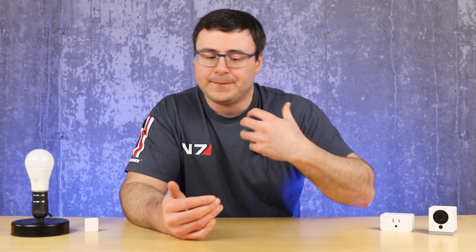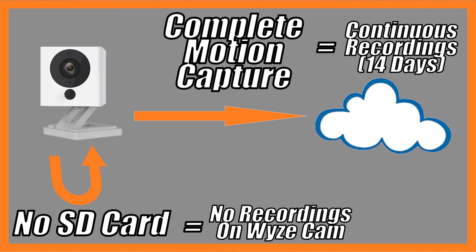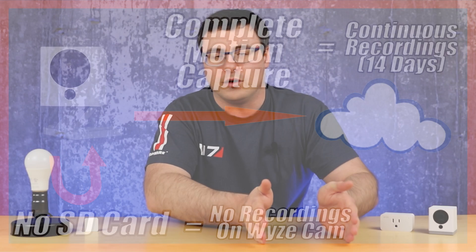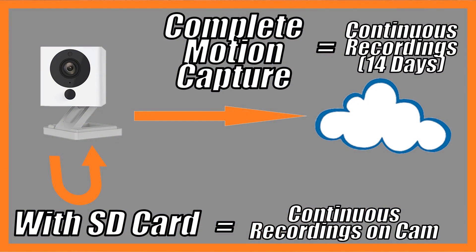If you want to extend remote recordings — say you're worried someone might steal the camera and you'd lose the local recordings — you can purchase a cloud recording service at $1.50 per camera per month (US). This extends cloud recording similarly to how the micro SD card extends local recording: it creates one-minute files and continues as long as the event requires. You can combine local SD card recording and the cloud service together as a hybrid setup for the most secure and comprehensive recordings possible.